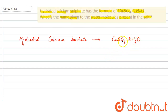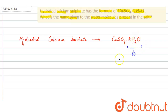As you can see in the formula of hydrated calcium sulfate, there are two water molecules which are attached to the calcium sulfate. The name given to these water molecules is known as water of crystallization.